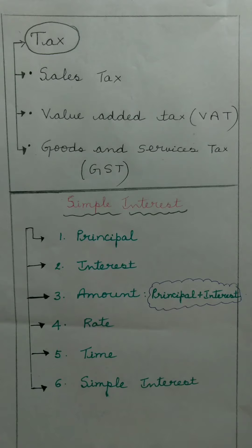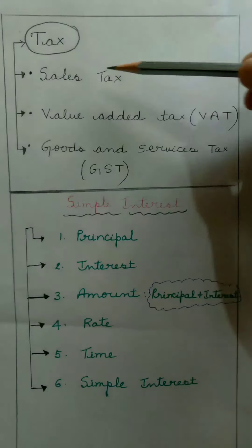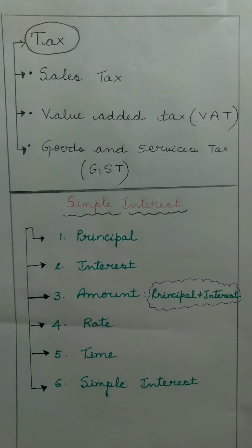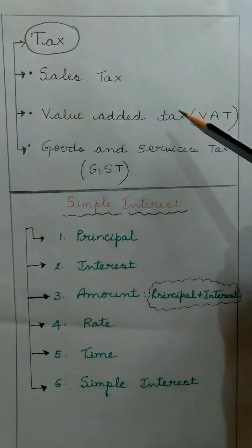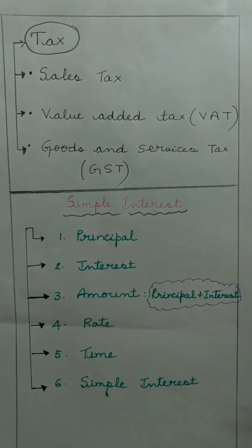The next topic is tax. The government requires money for its functioning, and this money is collected from the public in the form of taxes. In Comparing Quantities for 8th standard, we study three types of taxes: sales tax, value added tax (also called VAT), and goods and services tax (called GST).